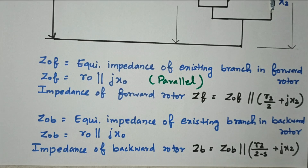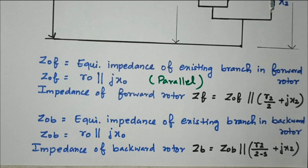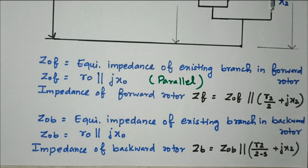In this video we discussed the equivalent circuit of a single phase induction motor based on the double field revolving theory, with one stator and two imaginary rotors having slips s and 2 minus s. We covered the cases with and without core loss, and calculated impedance, power, torque, shaft torque, and efficiency. Subscribe the channel for more videos and notifications. The soft copy is available in the drive link in the description box. All the best for your examination.